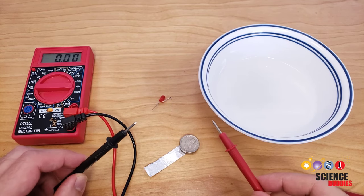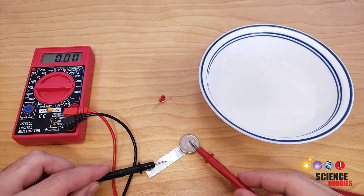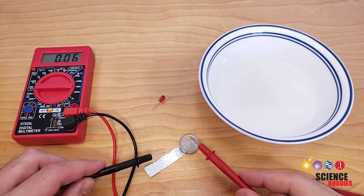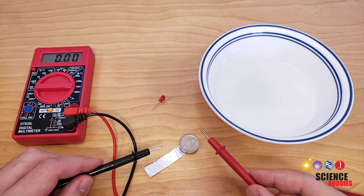You should now know how to build your own voltaic pile. Just remember to be careful with the amount of pressure you apply with the multimeter probes and watch out for electrolyte dripping over the edges of the battery.